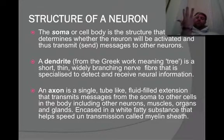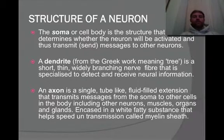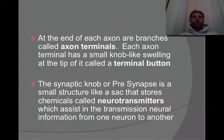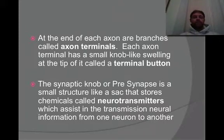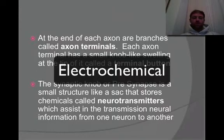You also have the dendrites — they receive the information. Then you have the cell body. After that, the information goes down the axon. Once it's gone through the axon, it then goes into the axon terminals, where we have our terminal buttons, which almost connect to the dendrites of the next neuron. You also have the synaptic knob or the presynapse where your neurotransmitters — your chemicals or your vesicles — are stored so that information can be transferred from electrical to chemical information. That's why the process is called electrochemical.